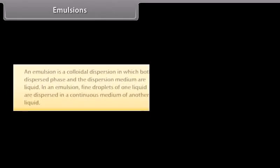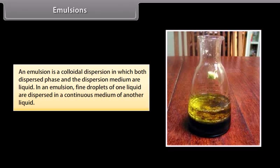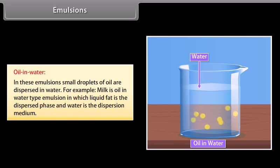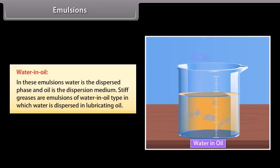Emulsions: An emulsion is a colloidal dispersion in which both dispersed phase and dispersion medium are liquid — fine droplets of one liquid are dispersed in a continuous medium of another liquid. There are two types: oil-in-water, where droplets of oil are dispersed in water (e.g., milk, in which liquid fat is the dispersed phase and water is the dispersion medium); and water-in-oil, where water is the dispersed phase and oil is the dispersion medium (e.g., stiff greases, in which water is dispersed in lubricating oil).